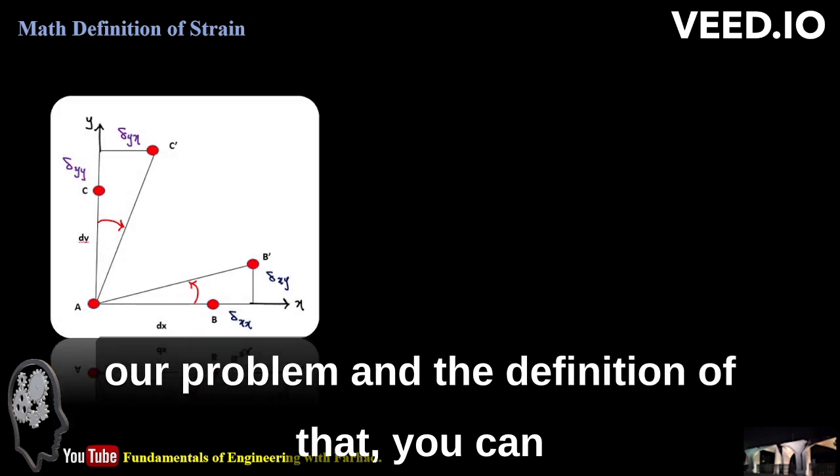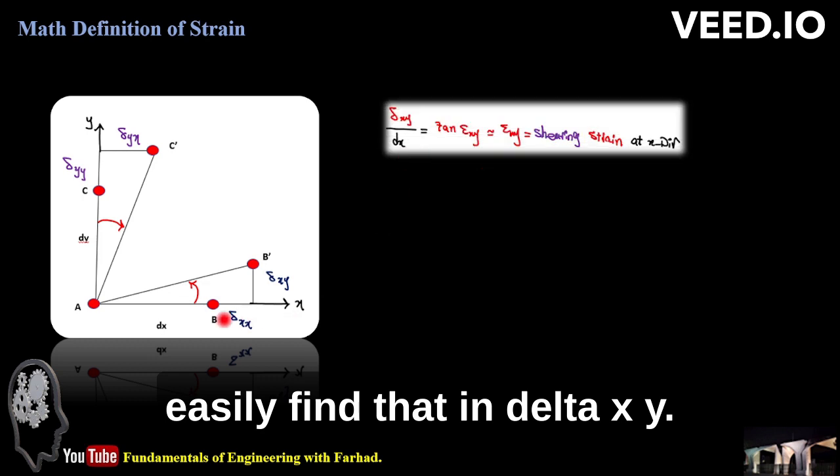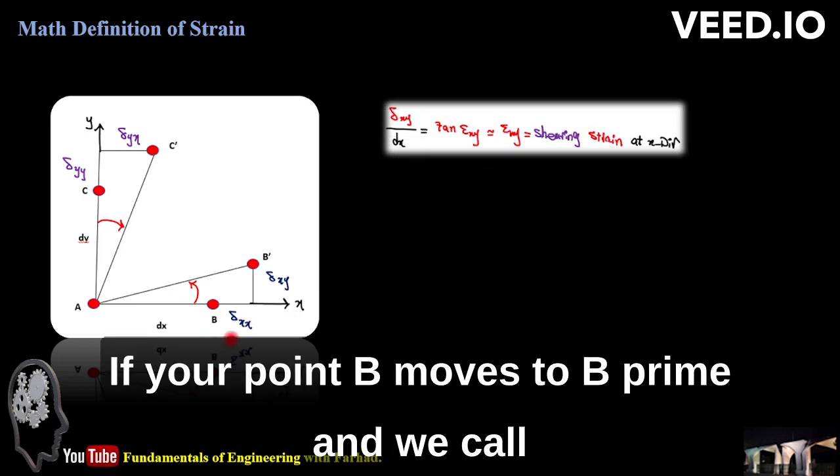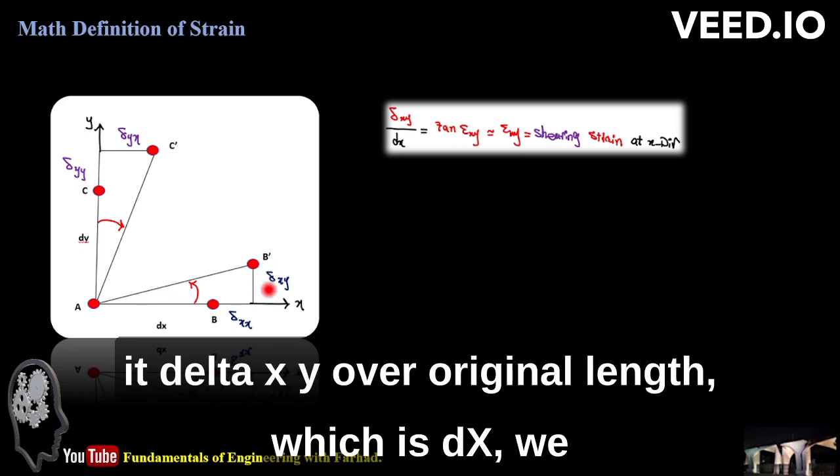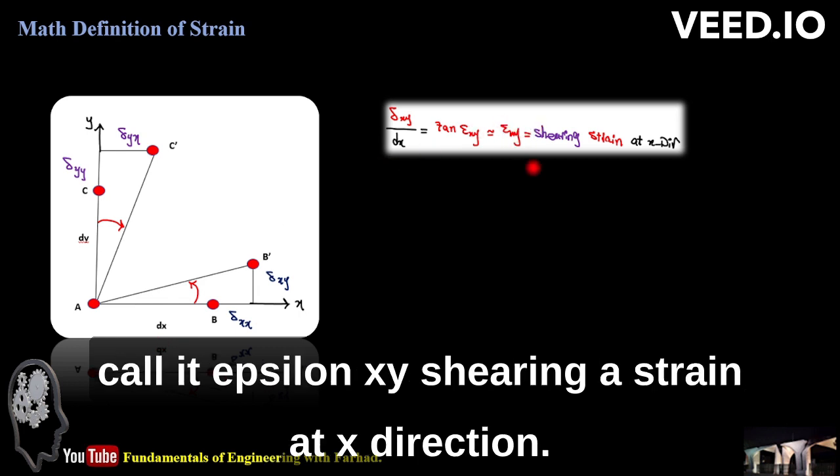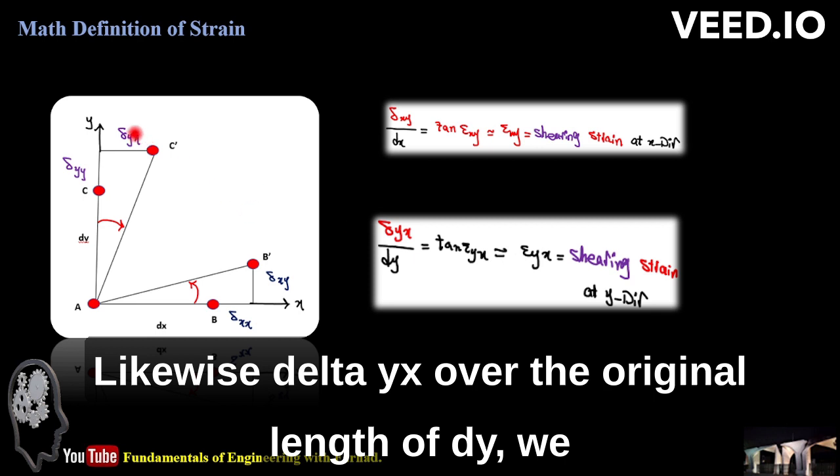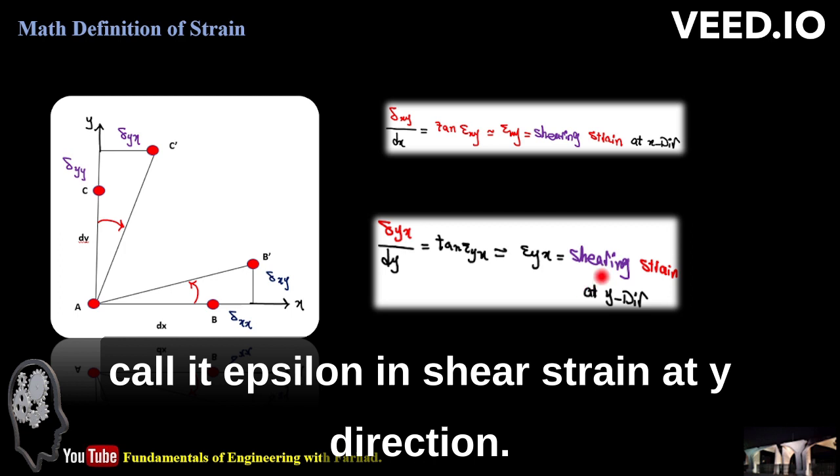So that's the same as what we calculate in our problem. And the definition of that, you can easily find in delta xy. If your point B moves to B prime, we call it delta xy over original length dx. We call it epsilon xy, shearing strain in x direction. Likewise, delta yx over the original length dy, we call it shear strain in y direction.